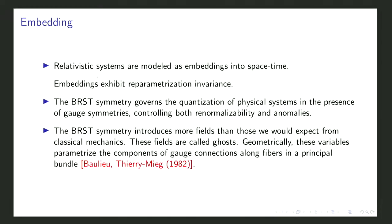Why does BRST symmetry appear? When you try to describe a relativistic system in a covariant way, you model it as an embedding in spacetime, unifying space and time. But embeddings come with invariances — reparameterization invariance — and the physics must be invariant under how you define proper time. The BRST symmetry governs the quantization of physical systems in the presence of gauge symmetries, controlling both renormalizability and anomalies.